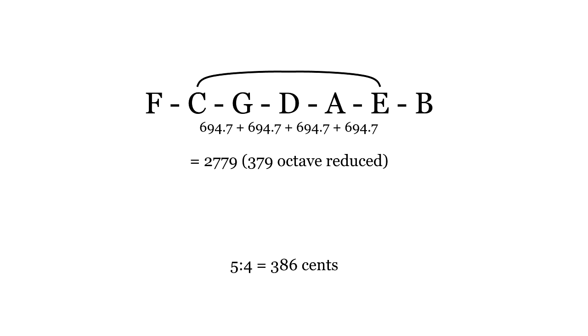Nineteen tet's fifth is seven cents flat. That makes the major third slightly flat as well, though the major sixth is close to perfect.